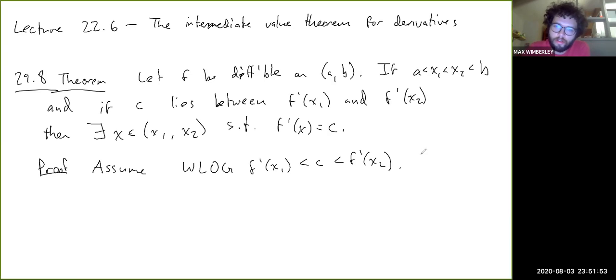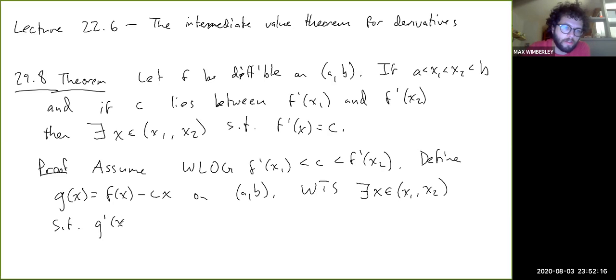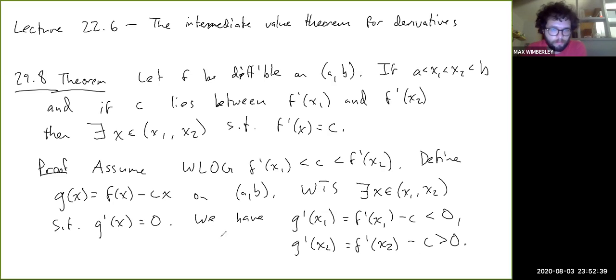Define g(x) equals f(x) minus cx on (a,b). We want to show there exists an x in (x₁, x₂) such that g'(x) equals zero. We have g'(x₁) is f'(x₁) minus c, which is less than zero, and g'(x₂) is f'(x₂) minus c, which is greater than zero.